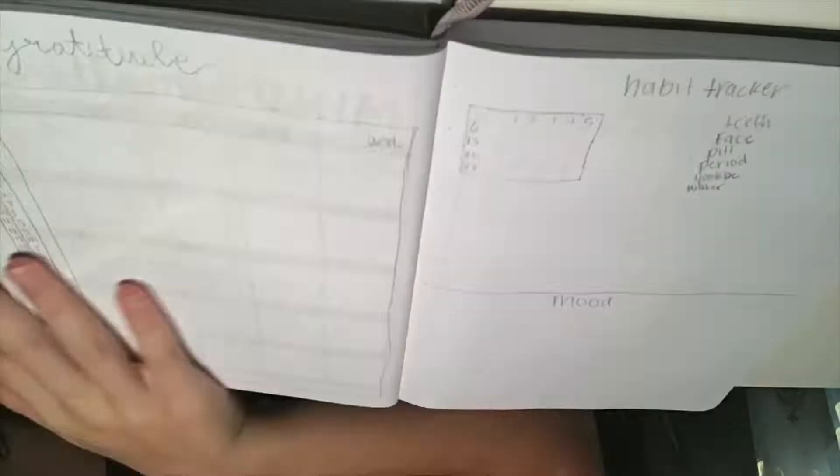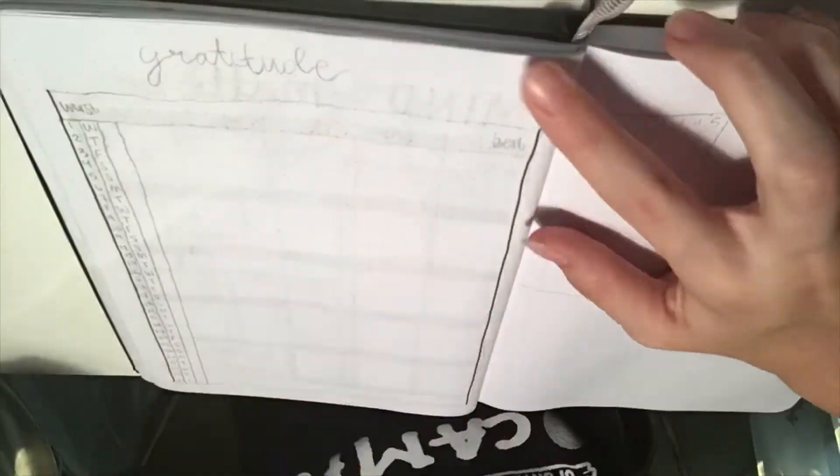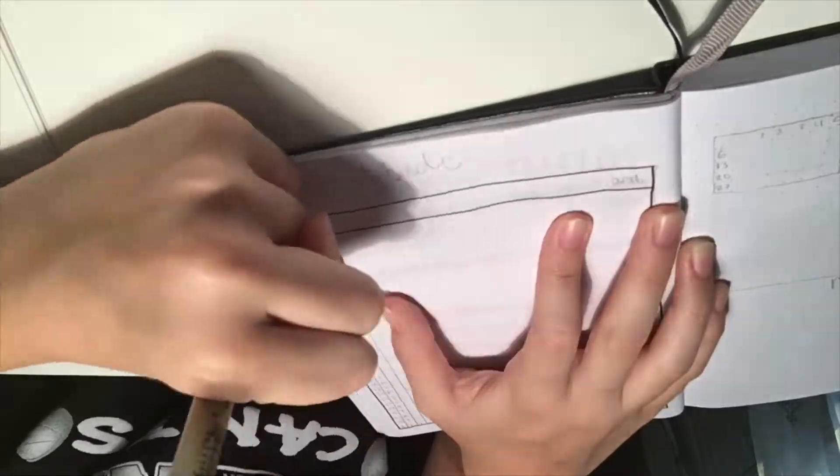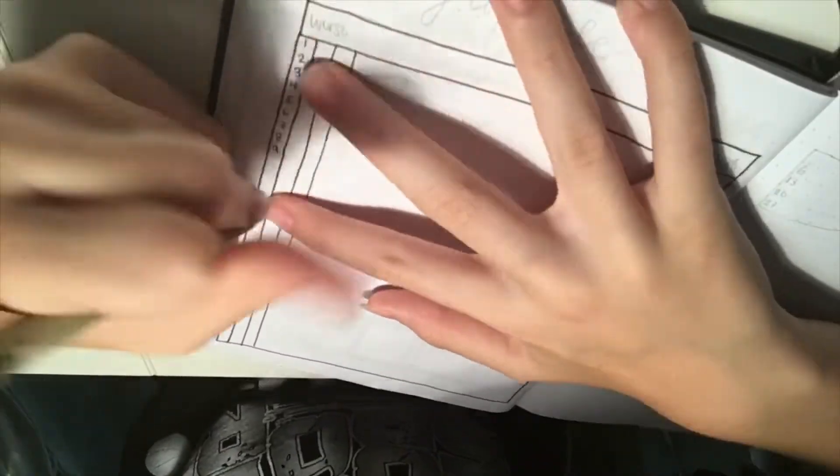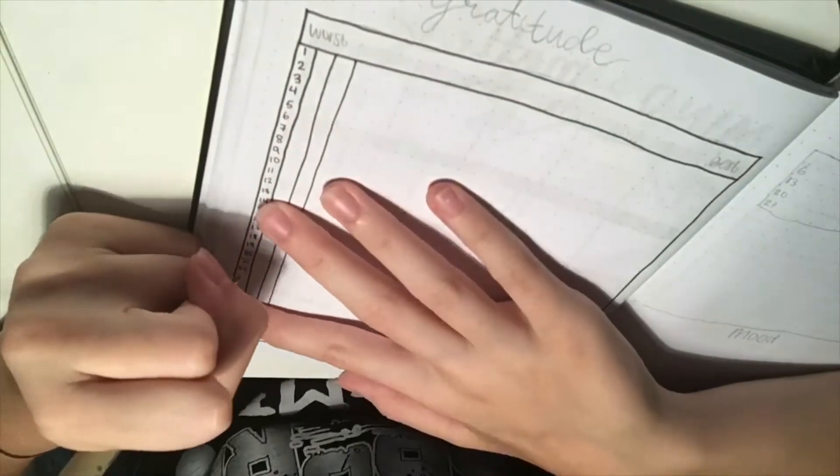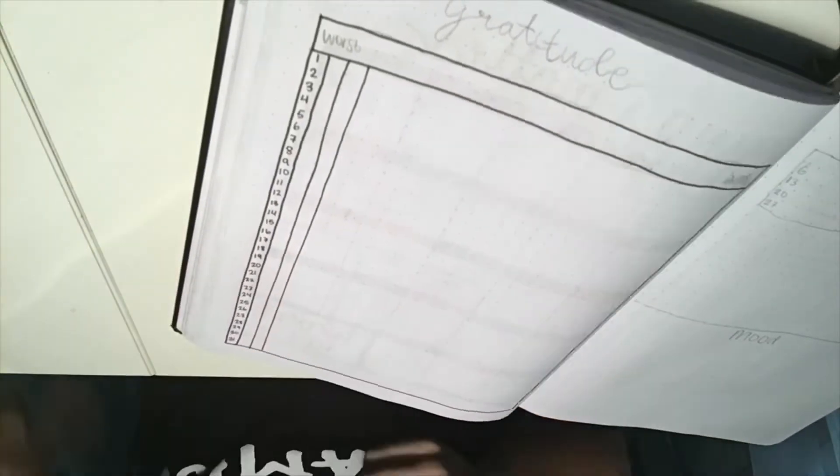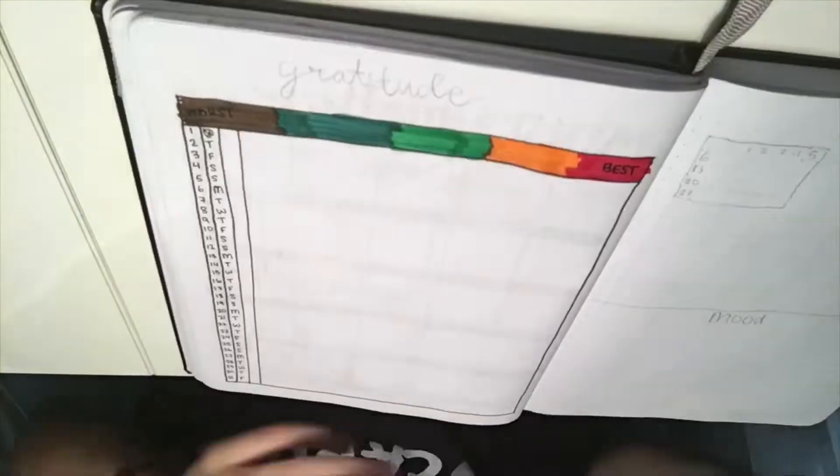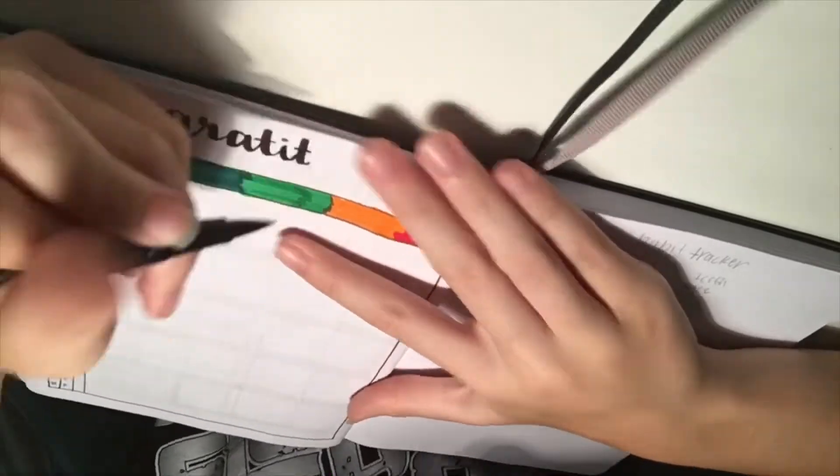In the next spread, we have a gratitude tracker. This one's pretty simple. I lined the left side with three columns: one for days of the month, days of the week, and rate of productivity. Each day, I'll write a sentence about my day and color in the box based on how productive I was. At the top, I colored in my range of productivity and wrote gratitude.